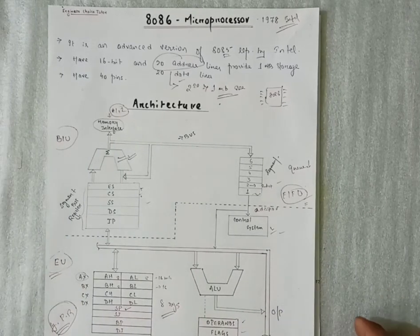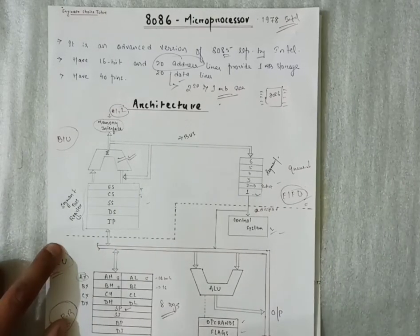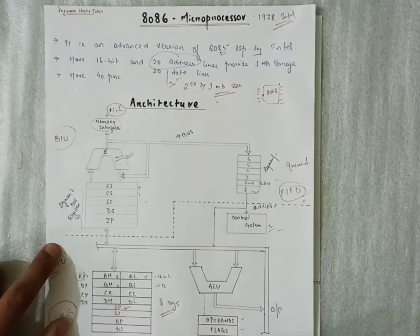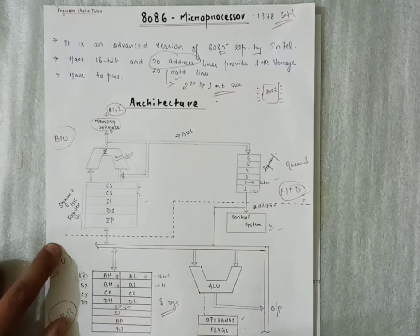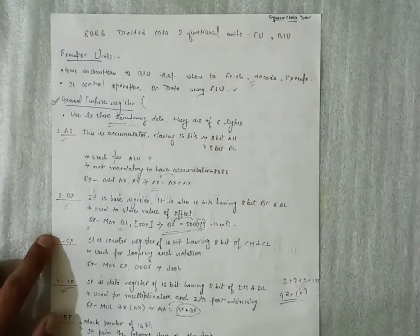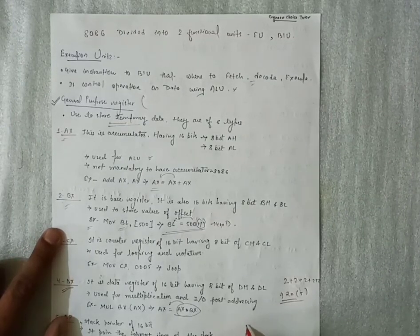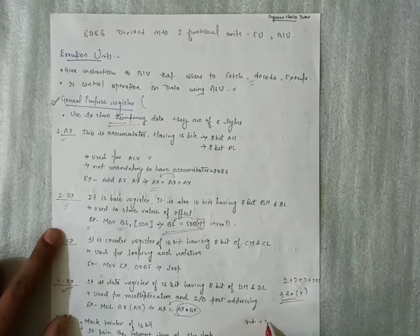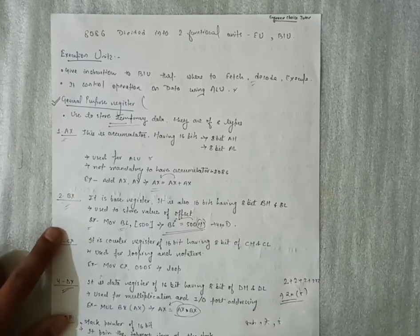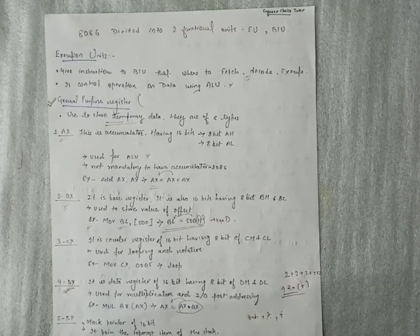Two main things remain: the Flag and the Operand. The Flag takes care of carry, sign, and zero flags. The Operand handles operations such as subtraction, summation, multiplication, and division. That is all about the 8086 microprocessor architecture. Thanks for watching this video — please like, share, and subscribe to our YouTube channel.